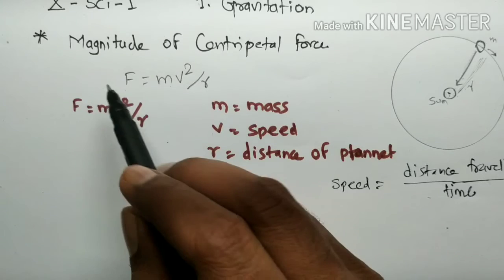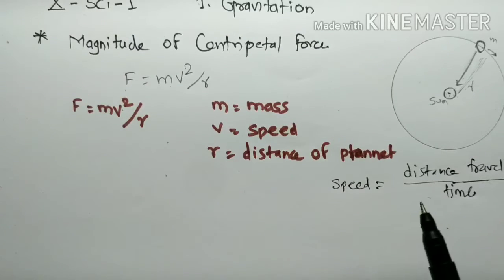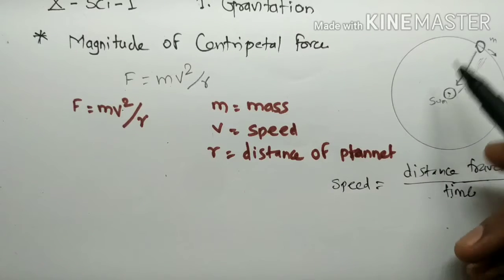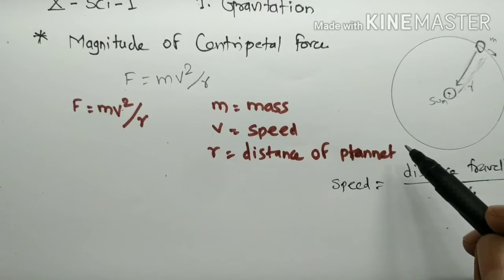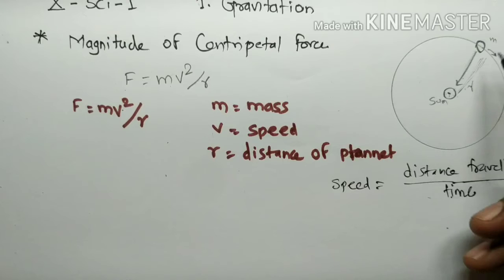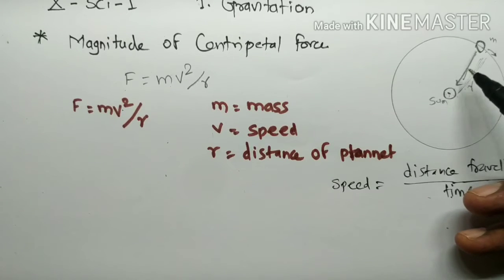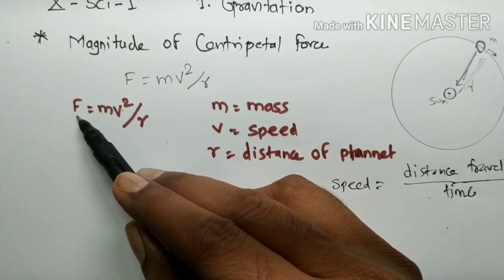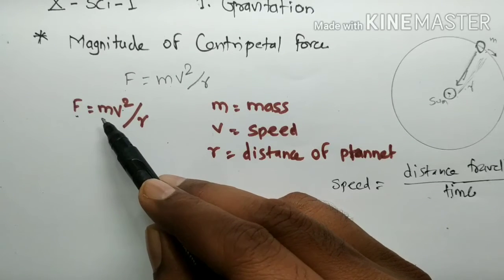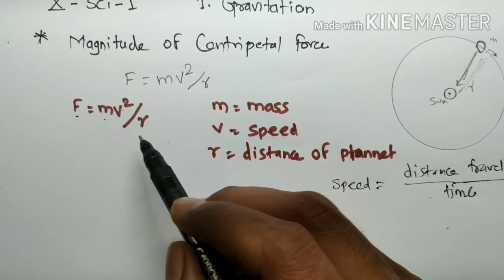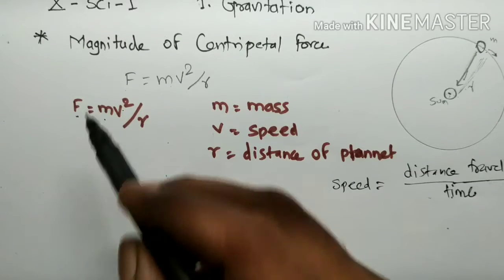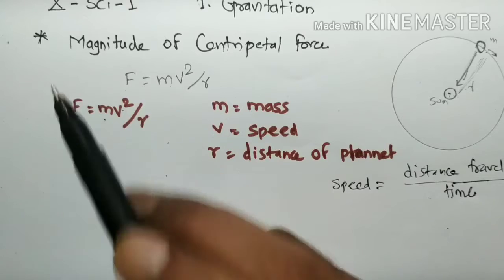r means the distance of the planet. The speed of the planet can be expressed in terms of the period of revolution T. If the planet is revolving around the sun in a circular orbit — uniform circular motion — then the centripetal force acting on the planet is directed toward the sun, calculated as F = mv²/r.